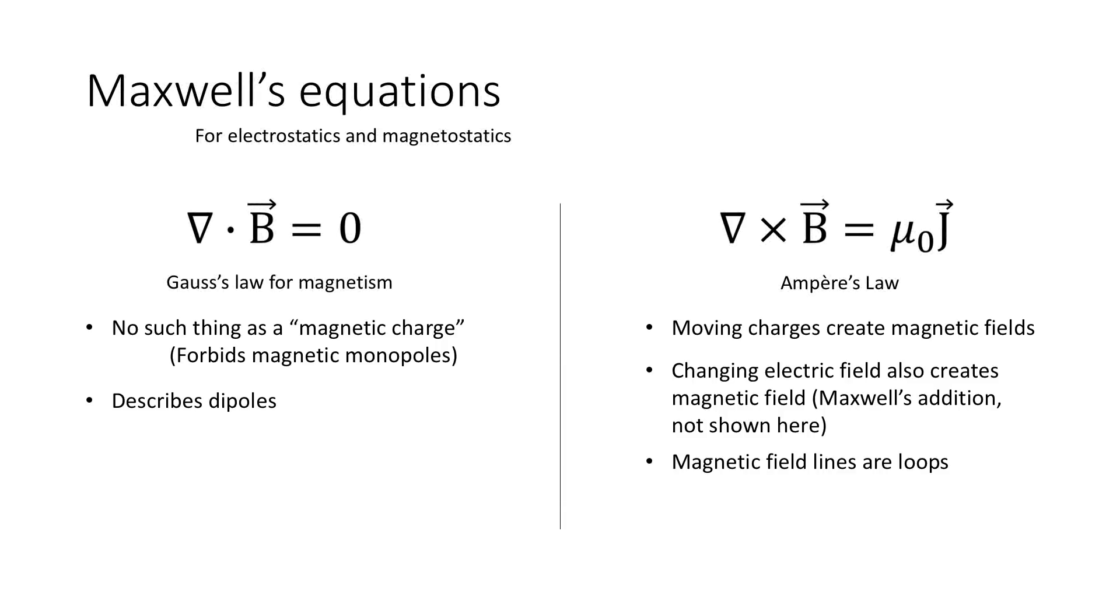To begin, I will start with some basics in magnetism. We start with Maxwell's equations, mainly the ones dealing with electrostatics and magnetostatics. On the left we have Gauss's law for magnetism, which tells us that there's no such thing as an isolated charge or magnetic monopoles are not possible. This means that whenever we have a magnet, it must have a north and a south pole.